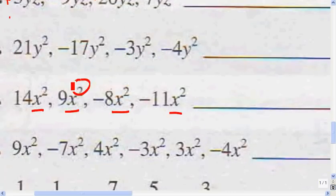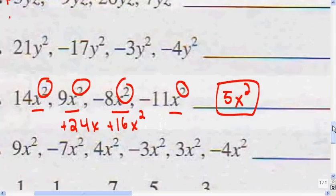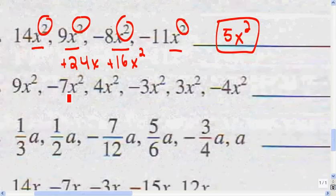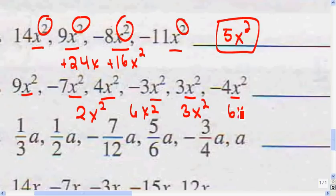Here I have x squared, x squared, x squared, x squared — same exponents, so they're like terms. I'll combine them: 14 plus 9 equals 23x squared, minus 8 equals 15x squared — positive. For the next problem, 9x squared minus 7x squared is 2x squared, plus 4x squared equals 6x squared, minus 3x squared equals 3x squared, plus 3x squared equals 6x squared, minus 4x squared equals 2x squared. I'm going kind of fast — you might want to do it on your own more slowly.